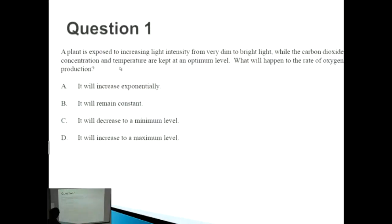This first question states that a plant is exposed to increasing light intensity from very dim to bright light, while the carbon dioxide concentration and the temperature are kept at an optimal level. What will happen to the rate of oxygen production?